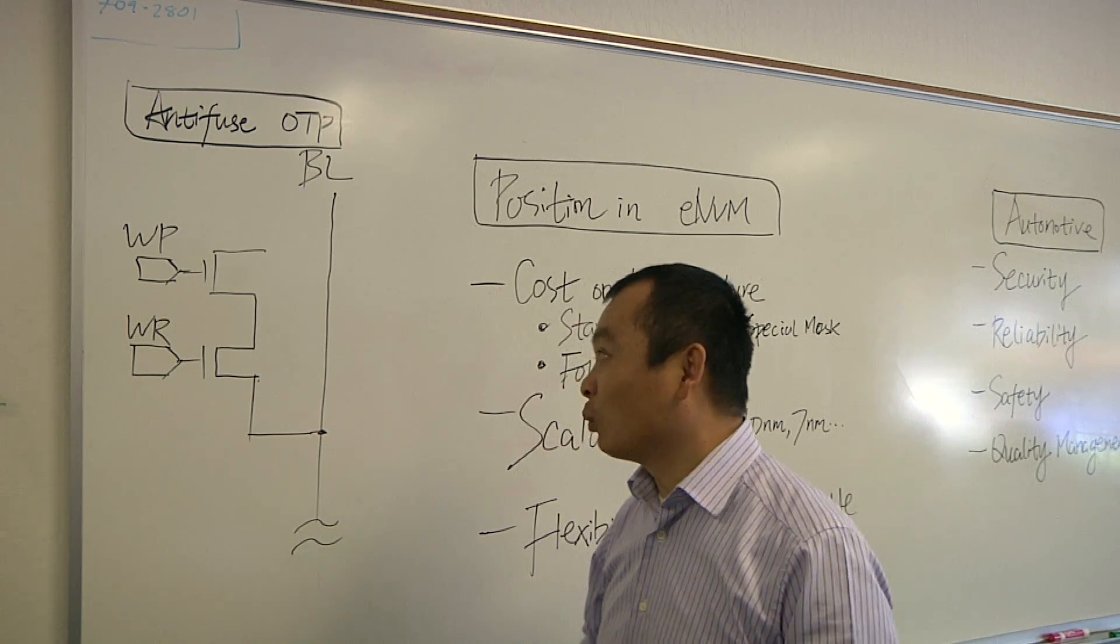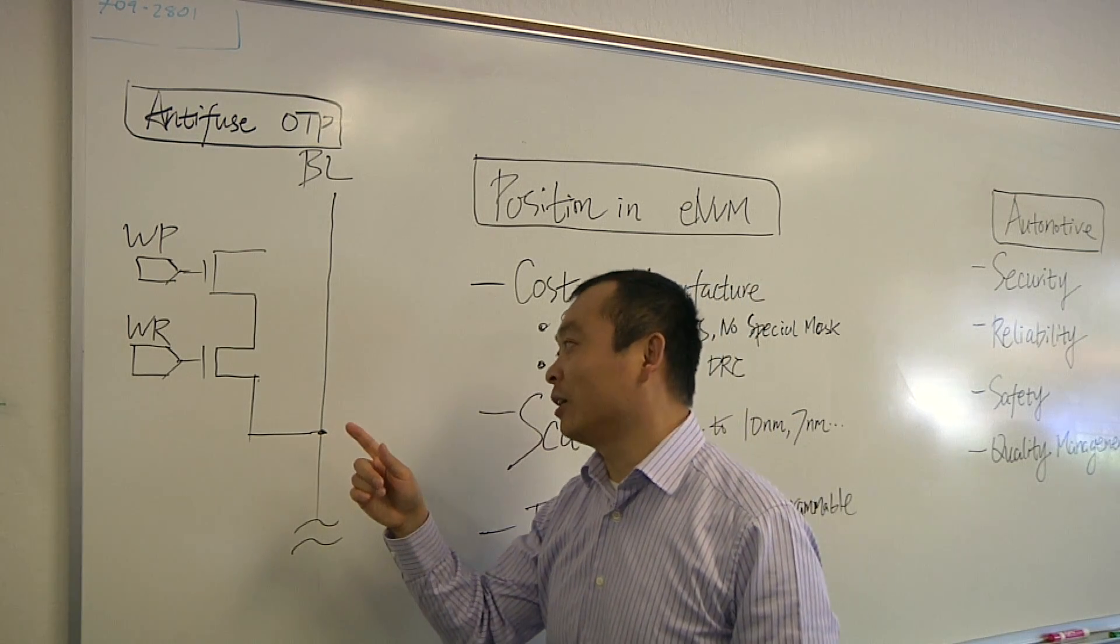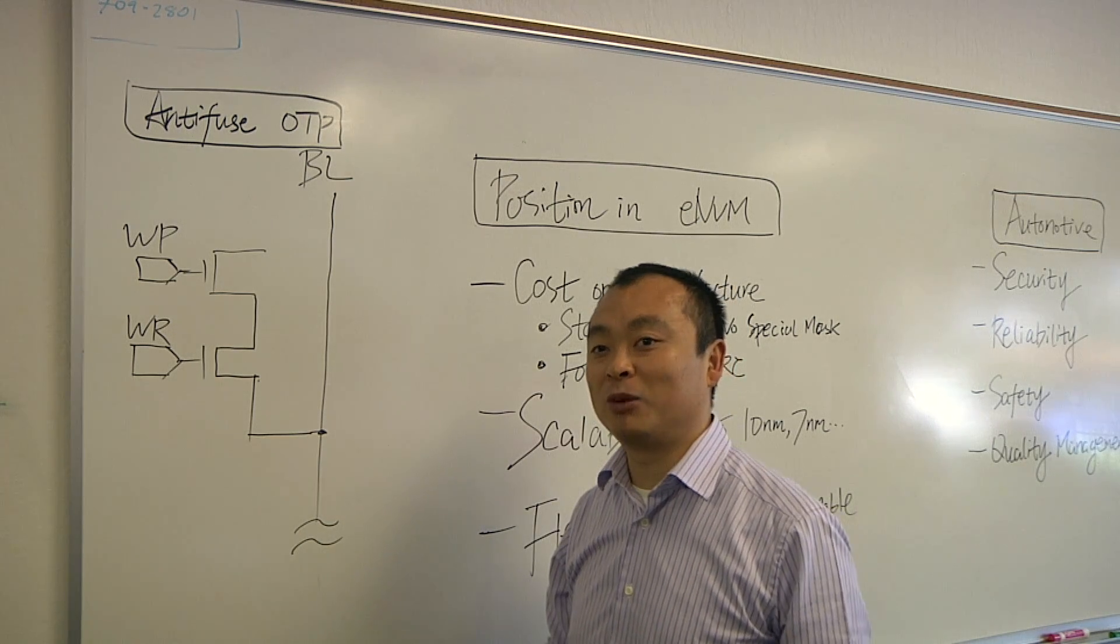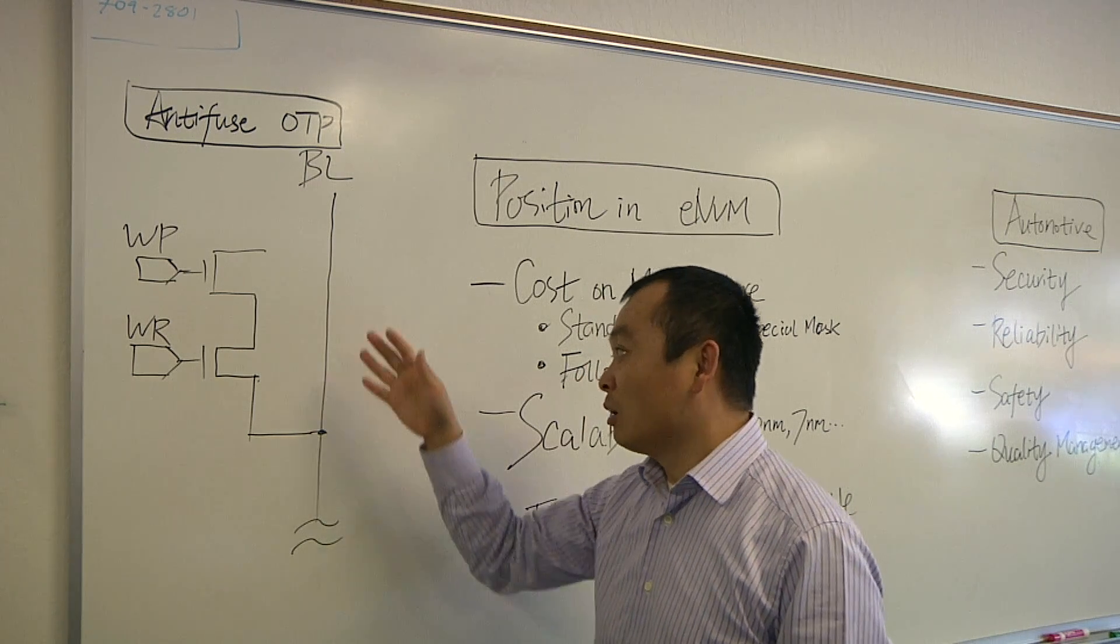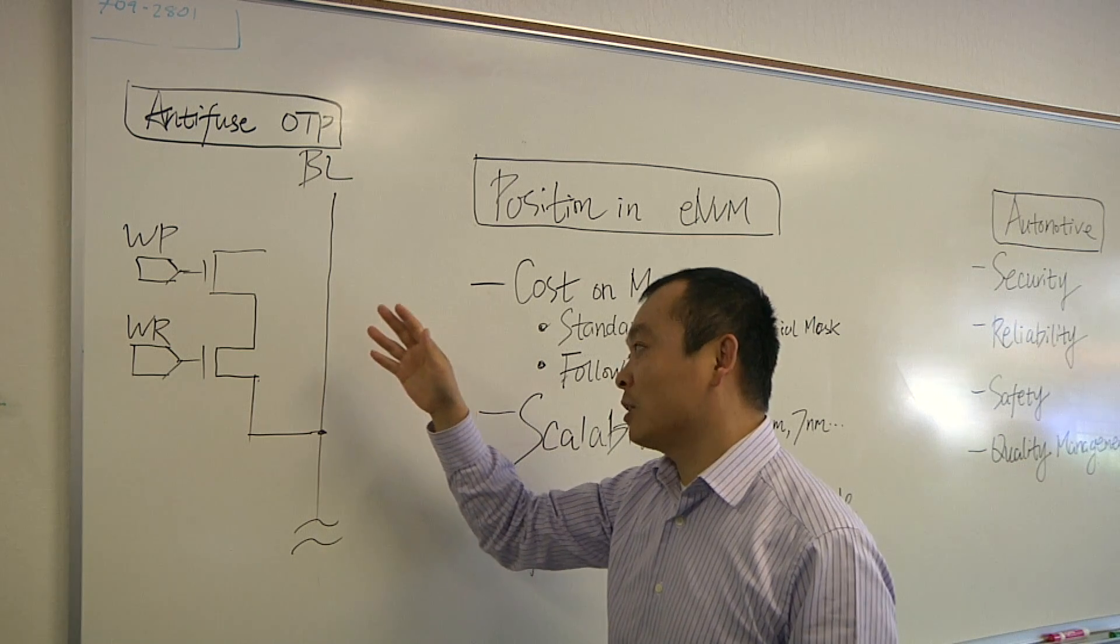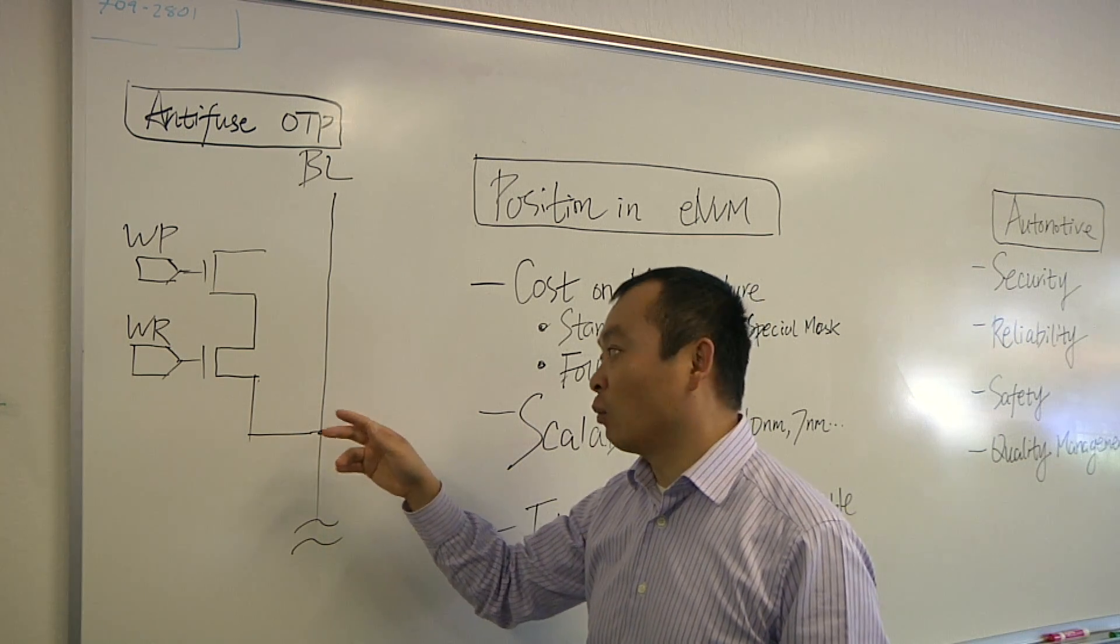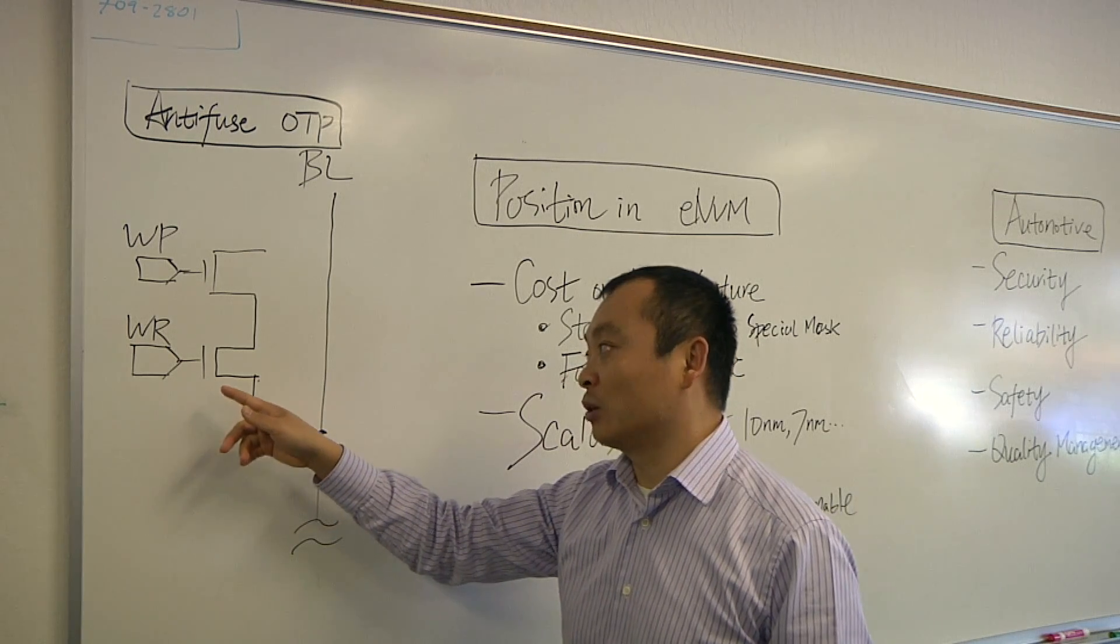Why don't you draw this out for us? What we are looking at is a standard cell structure of our anti-fuse OTP memory technology. Here, the anti-fuse OTP cell is consisting of two standard NMOS cells. One we call WR, means a read transistor.